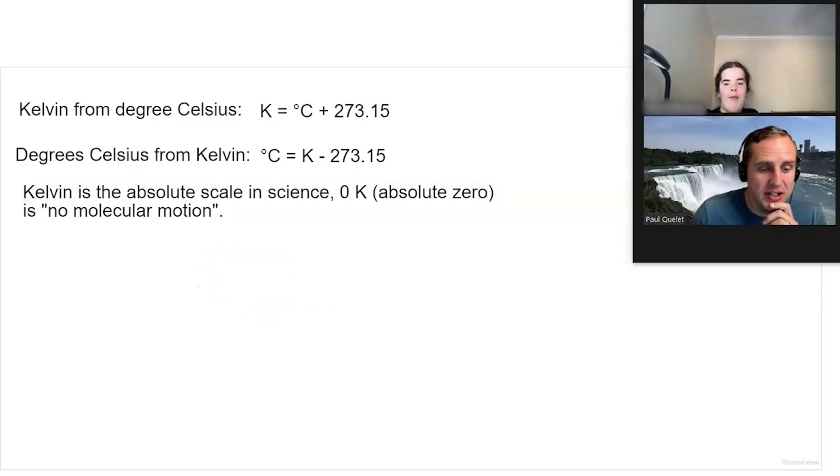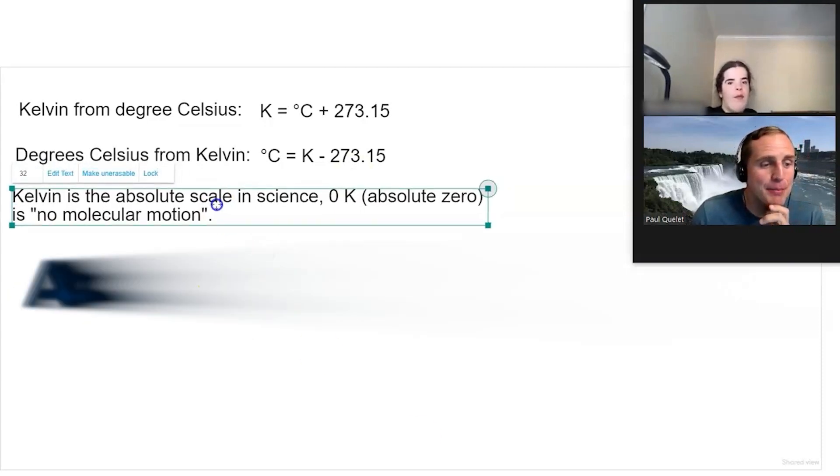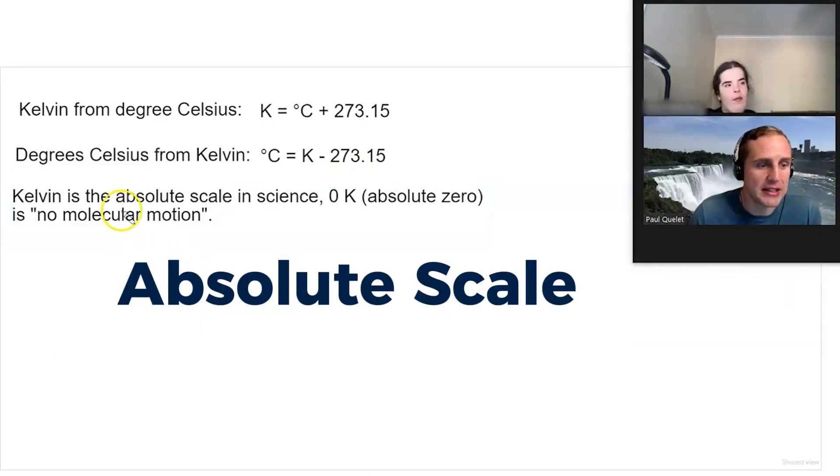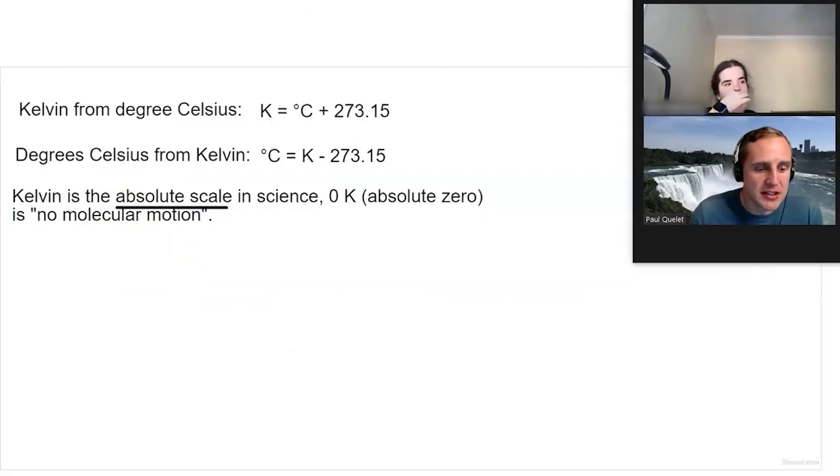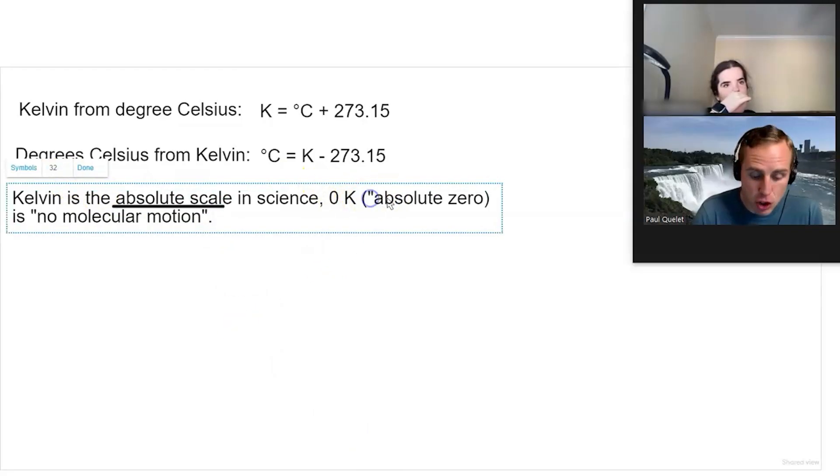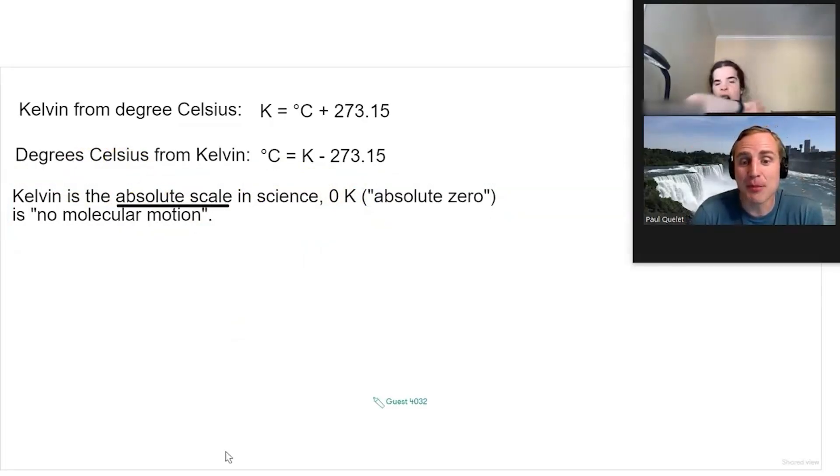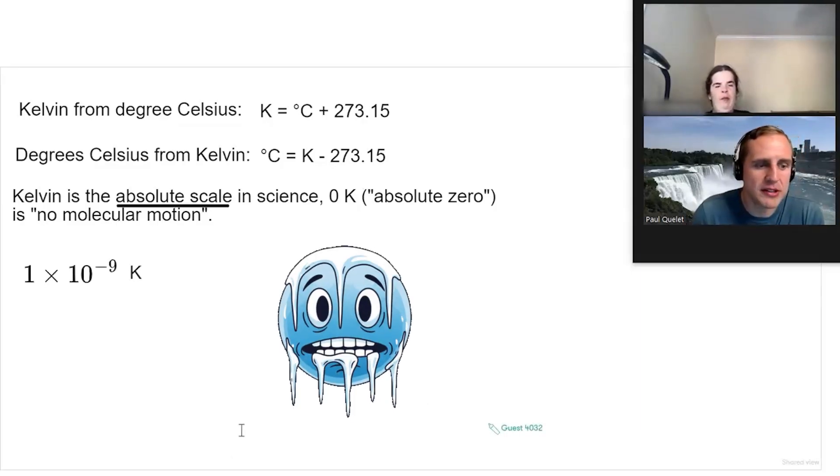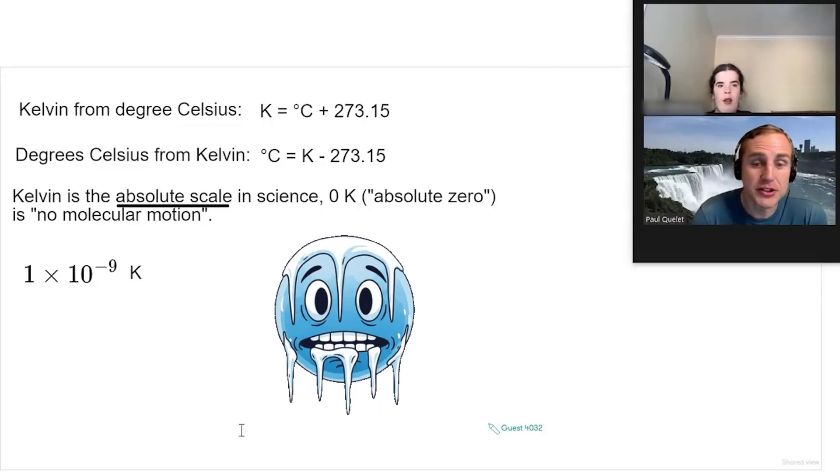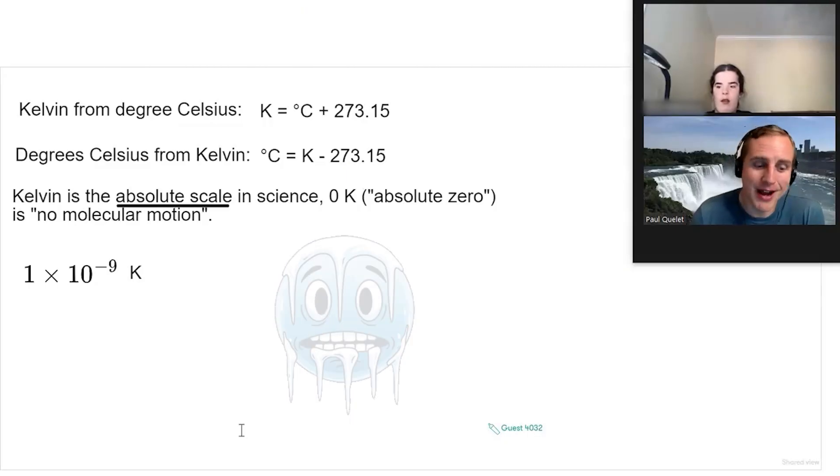It turns out that Kelvin is the absolute scale in science, which means zero Kelvin, which is what we sometimes call absolute zero, has no molecular motion, at least theoretically. No one's ever achieved absolute zero. People have gotten temperatures down to about 10 to the minus nine Kelvin. So that's one of the lowest temperatures ever recorded. It's extremely low, but not zero.